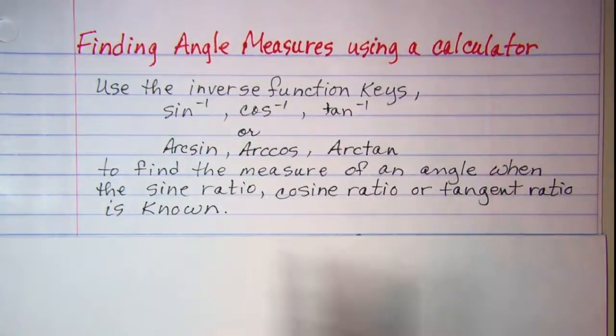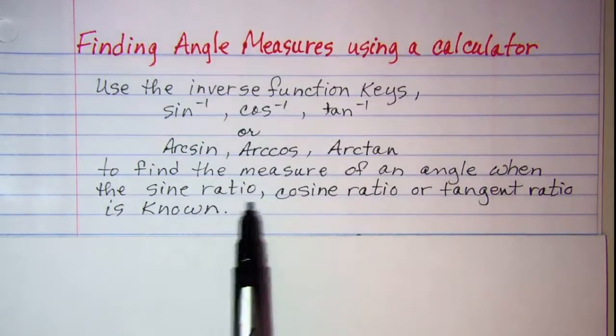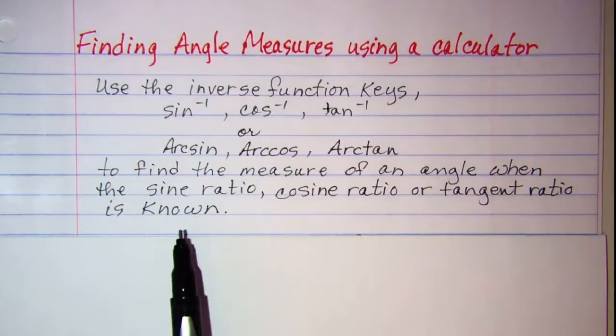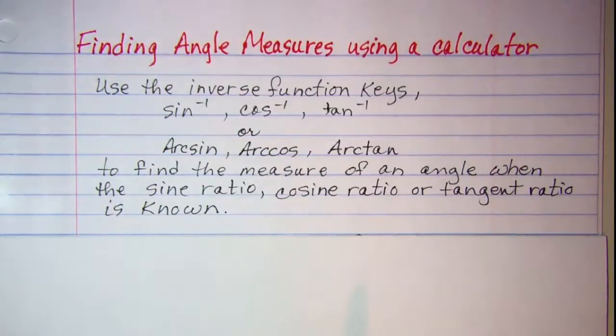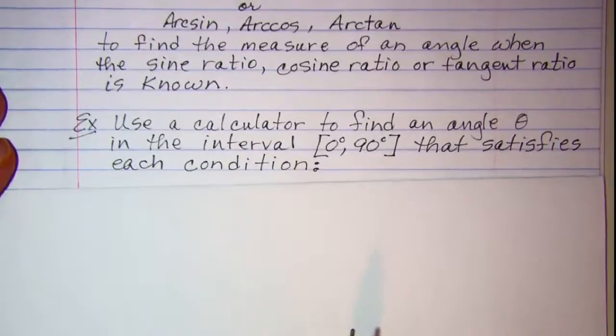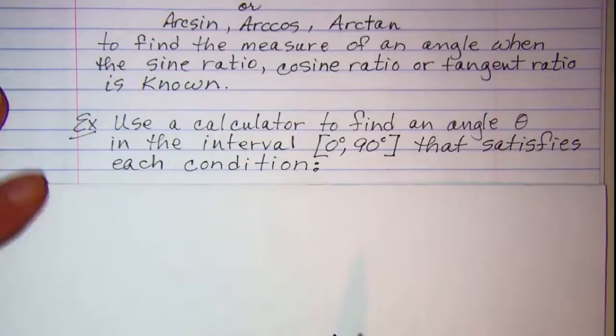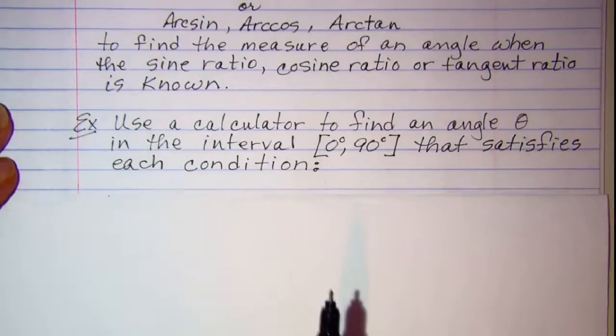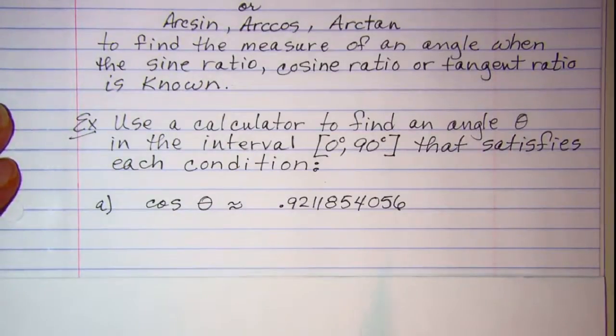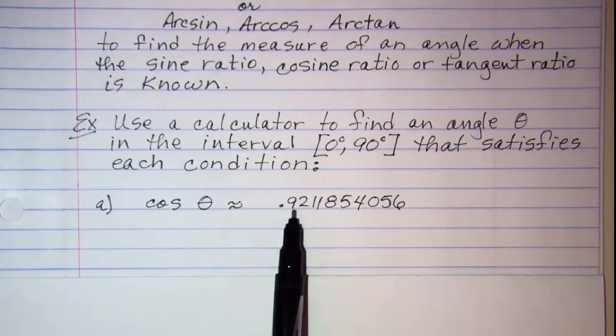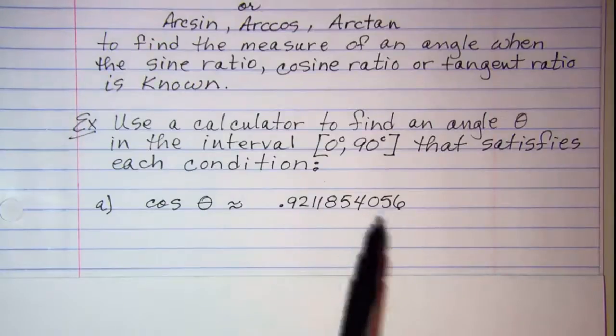So we use those keys to find the measure of an angle when the sine ratio, the cosine ratio, or the tangent ratio is known and we need to find the angle. Let's do an example. Use a calculator to find an angle theta in the interval from 0 to 90 degrees inclusive that satisfies each condition. And our first problem is the cosine of theta is approximately 0.9211854056.